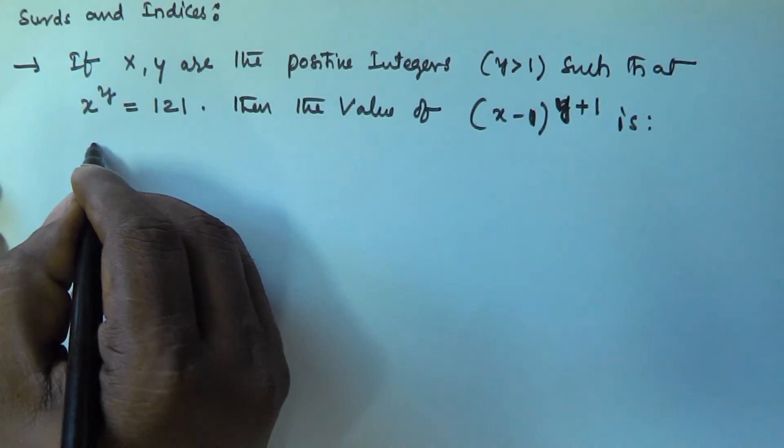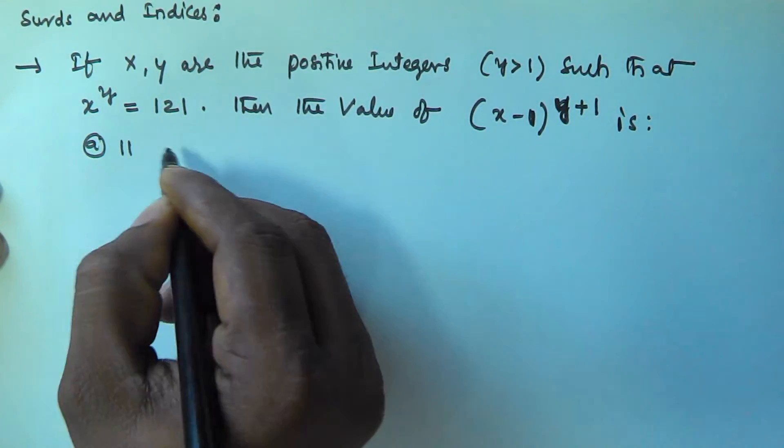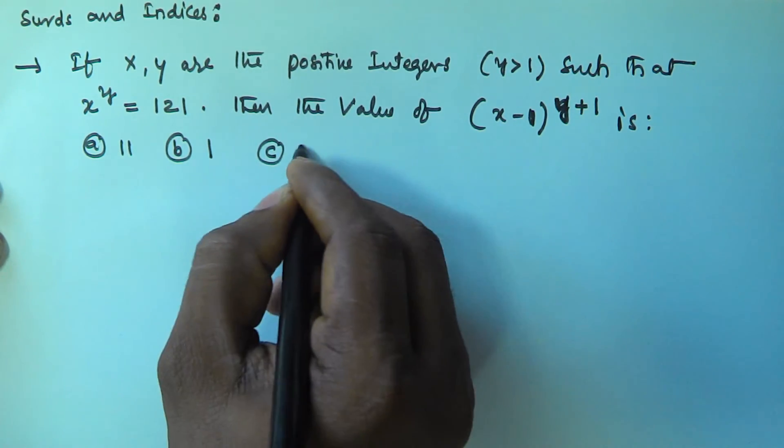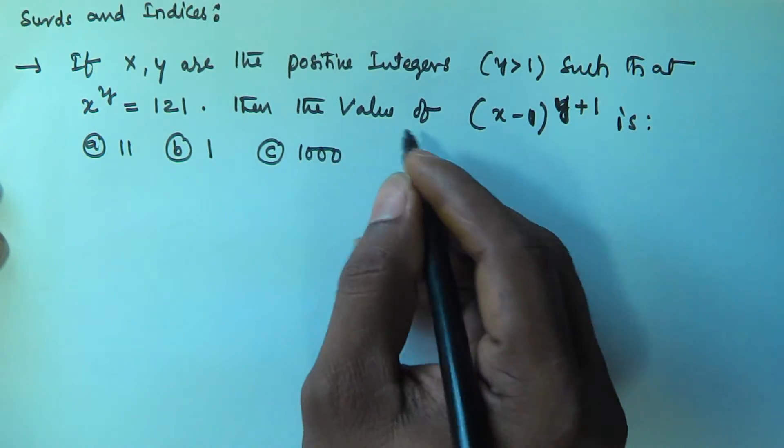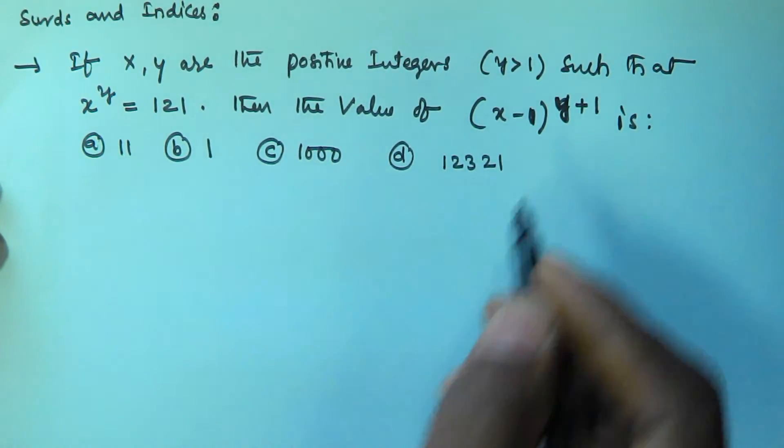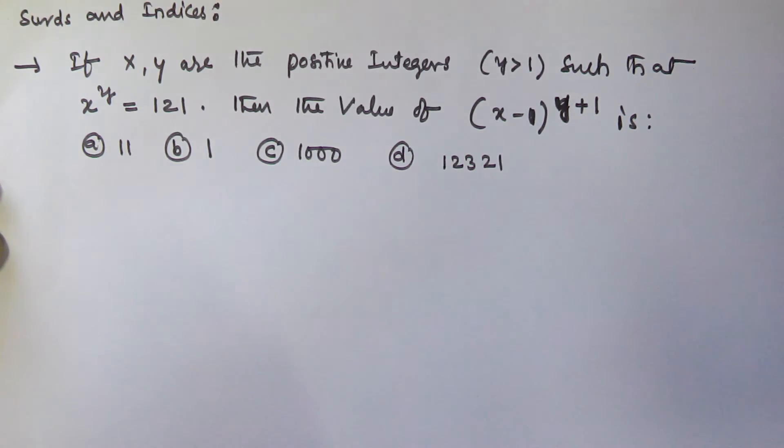The options are given: (a) is equal to 11, (b) is equal to 1, (c) is equal to 1000, and (d) is equal to 123.21.